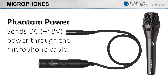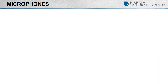Do keep in mind that condenser microphones require phantom power. Phantom power is a method of sending DC voltage through the mic cable to power the microphone. Most condenser microphones require 48 volts of phantom power. When using a condenser mic, make sure your mixer or DSP is capable of delivering phantom power to the mic.